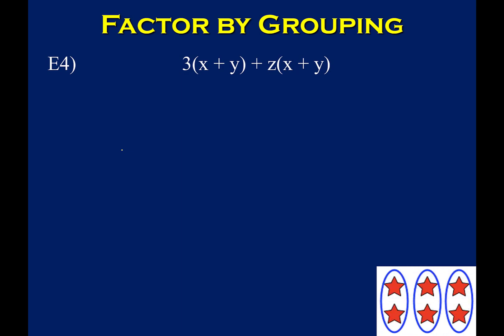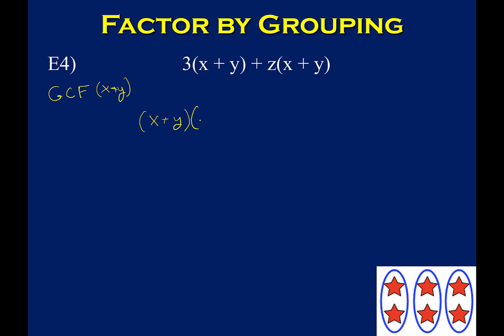Now I want to talk about factoring by grouping. Factoring by grouping occurs when you have four terms — or maybe more, but the ones we'll look at are just four terms. What I'm showing now is the second step of the process. If you notice, I have a GCF between these two terms — they both have a factor of x plus y. So I can remove that as a GCF. If I divide each of these by x plus y, then I'm left with 3 plus z.